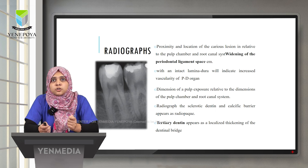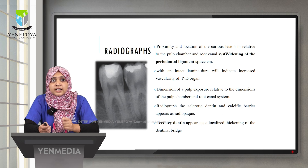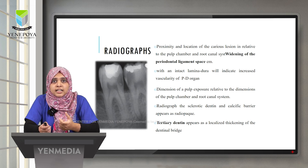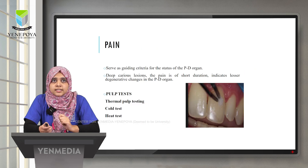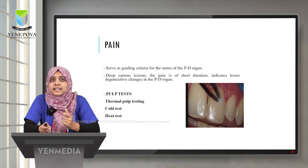Radiographs such as RVGs and IOPs show the proximity and location of caries, widening of the PDL space, lamina dura integrity, pulp chamber dimensions, presence of sclerotic dentine, and tertiary dentine. Pain is a guiding criterion for the status of the pulp-dentine organ; in deep caries lesions, short-duration pain indicates lesser degenerative changes.